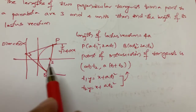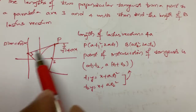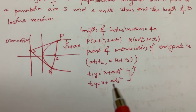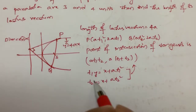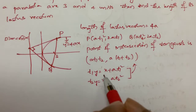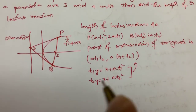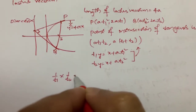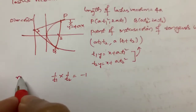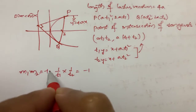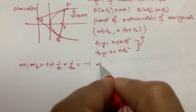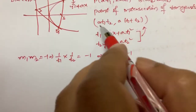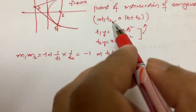They are intersecting on the directrix because if they are perpendicular, the product of their slopes is −1. The slope of the first tangent is 1/t₁ and the slope of the second is 1/t₂. So (1/t₁)(1/t₂) = −1, meaning m₁m₂ = −1 implies t₁t₂ = −1. Substituting this confirms they intersect on the directrix.